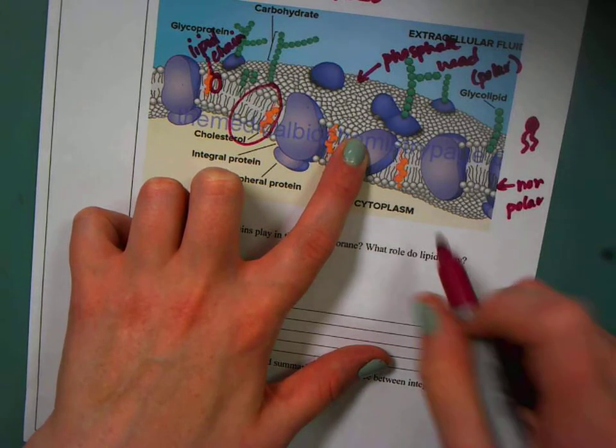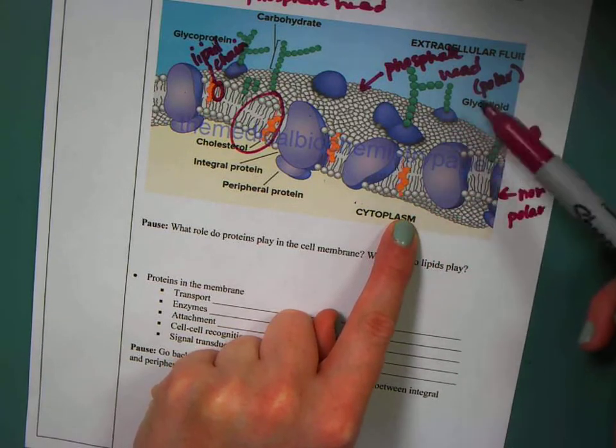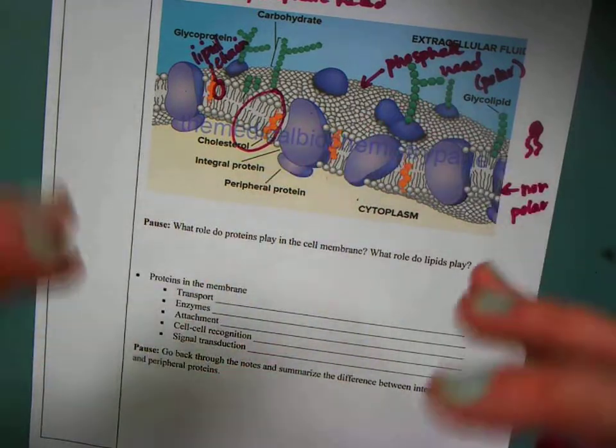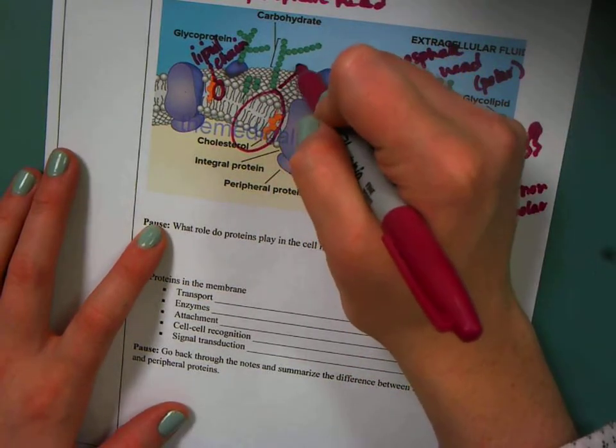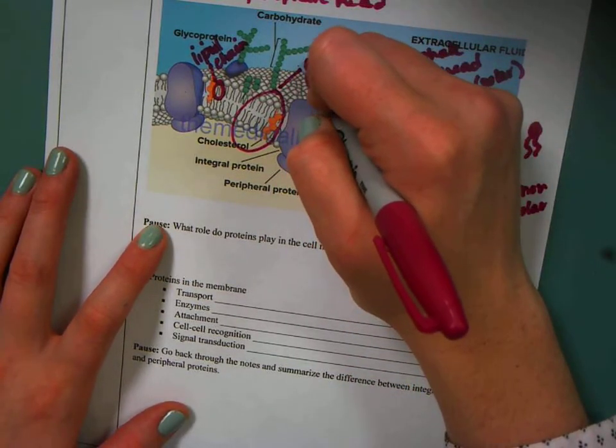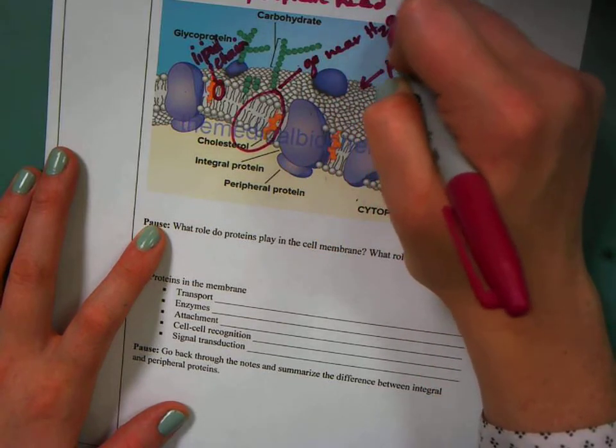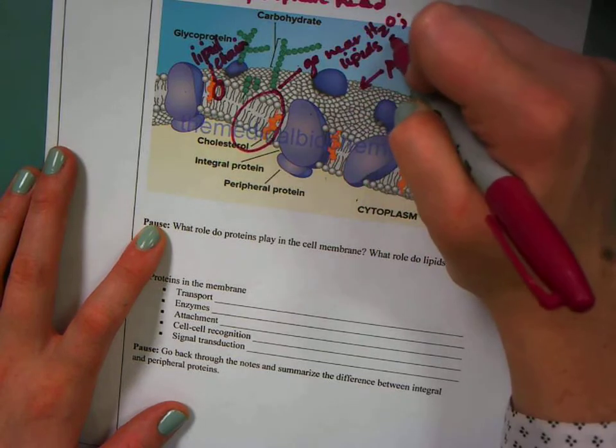So thinking about the fact that the cell is mainly made up of water, and outside you mostly have water as well, these phosphate heads will orient themselves so that they're close to the water. Remember, like dissolves like. So the phosphate heads go near the water, and the lipids stay away.